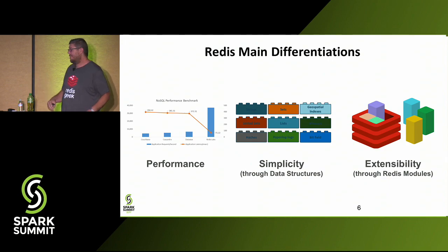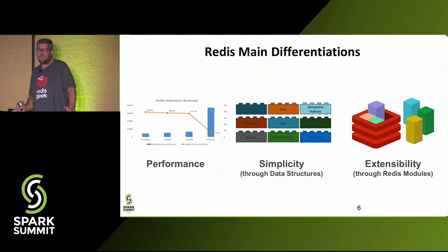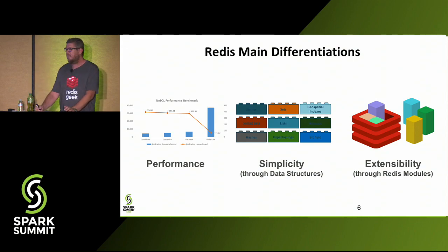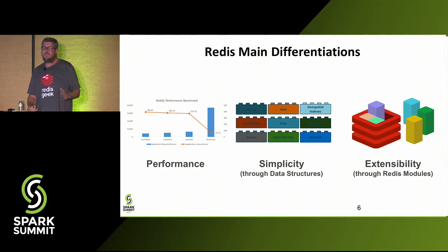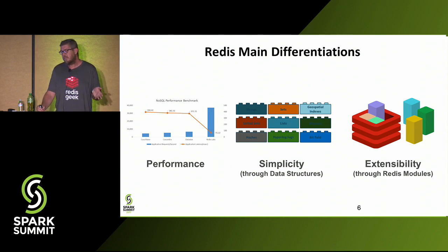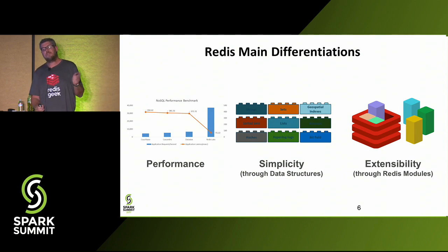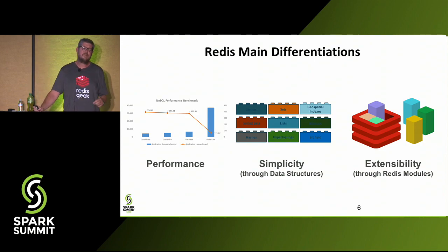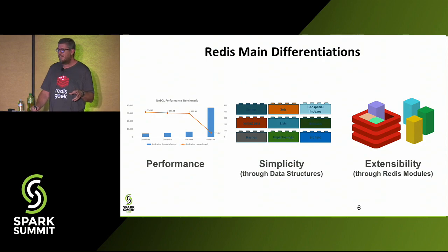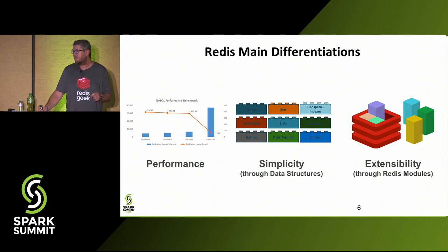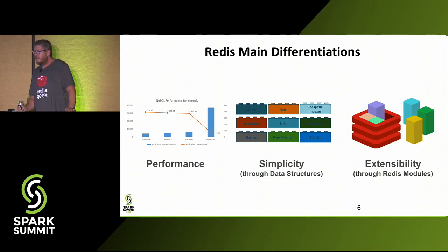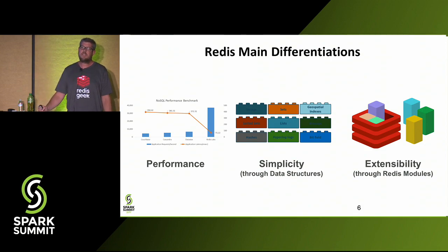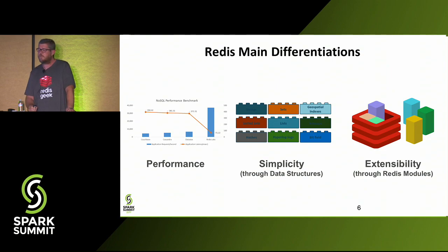What's so good about Redis? The first and very significant point is performance. Redis is very, very performance-oriented. It is written in C and is single-threaded. Every routine in Redis has been polished to be very efficient. Redis usually outperforms the competition by a margin. A single instance on the cloud can serve something like 2 million ops per second at sub-millisecond latency.